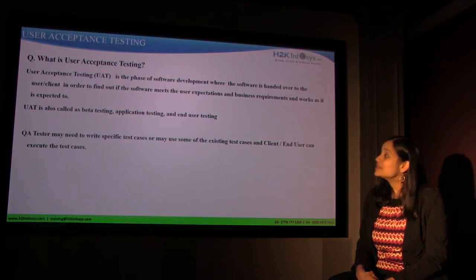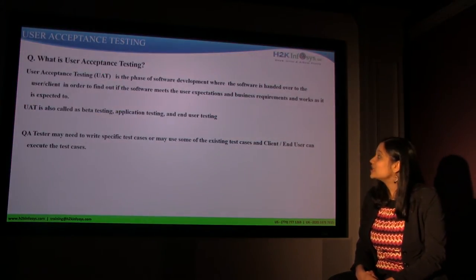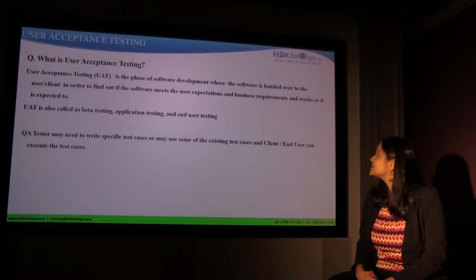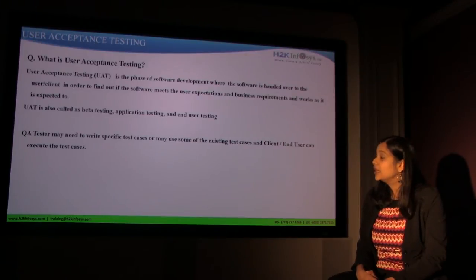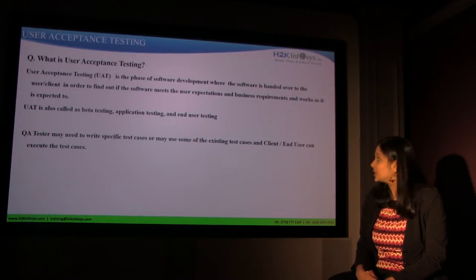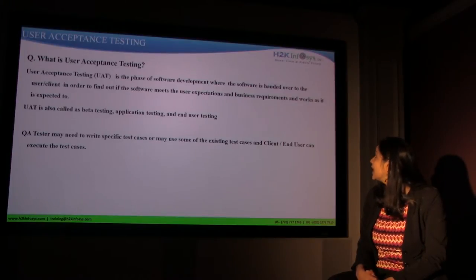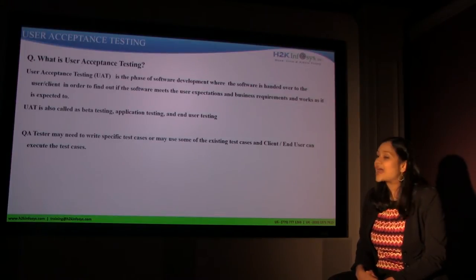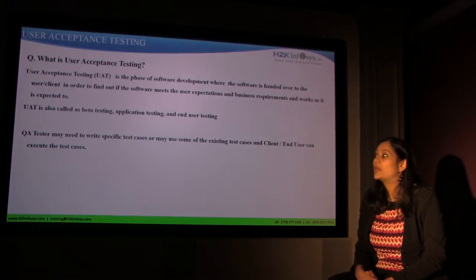User acceptance testing is the phase of software development where the software is handed over to the user or client in order to find out if the software meets the user expectations and business requirements, and works as it is expected to.